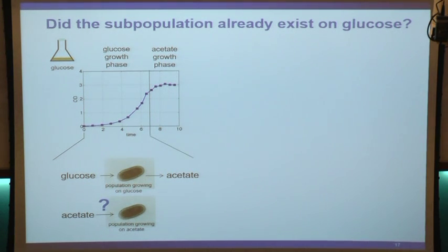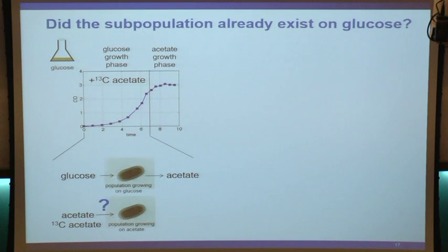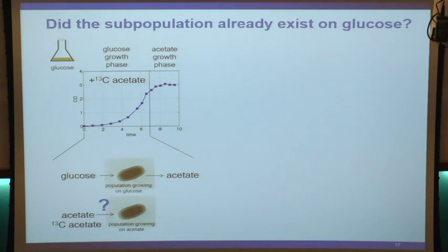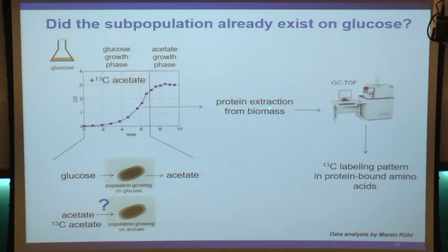This is our challenge - there are many cells in this culture. How do you find out whether they metabolize glucose or acetate? We opted for the following: we added 13C-labeled acetate to the glucose culture. If a subpopulation consuming acetate were present, they would take up this 13C-labeled acetate, and we would find the 13C label incorporated into the biomass. We took cells, extracted proteins, and used GC-TOF analysis to determine the 13C labeling patterns in protein-bound amino acids.